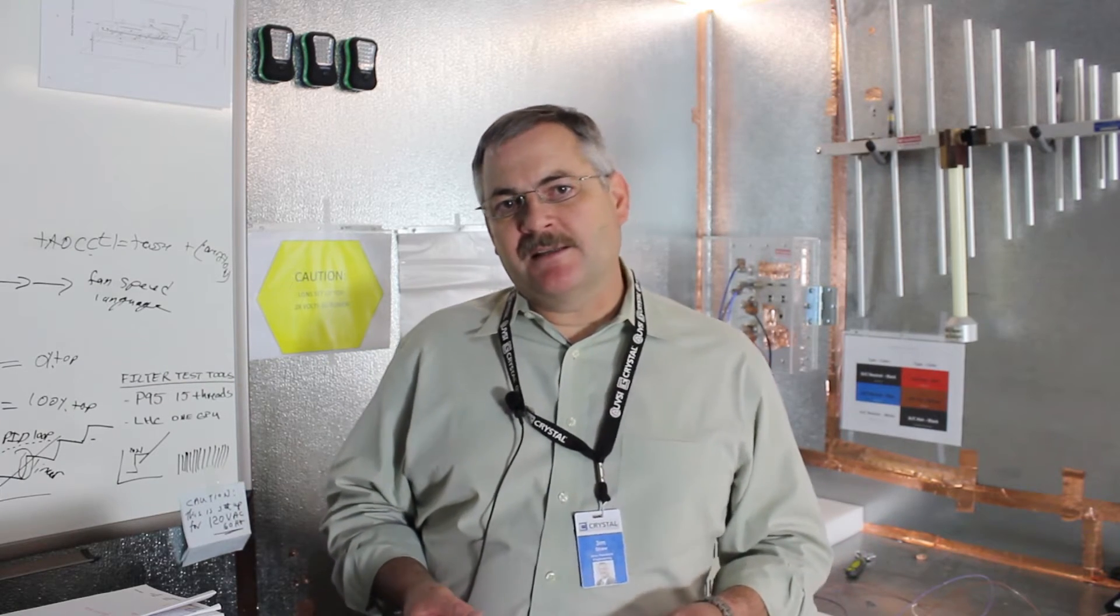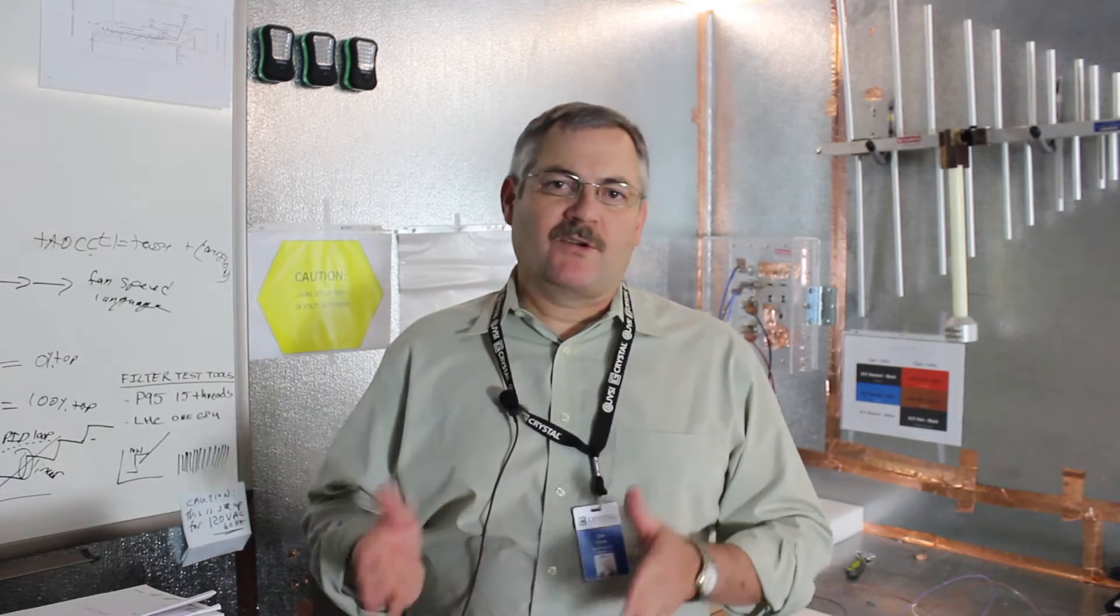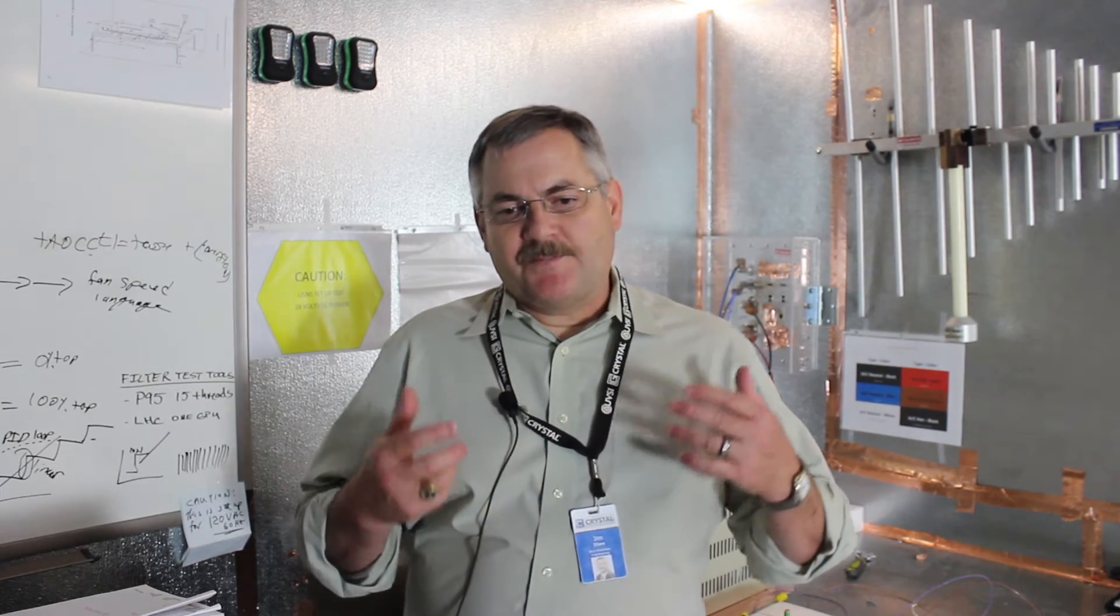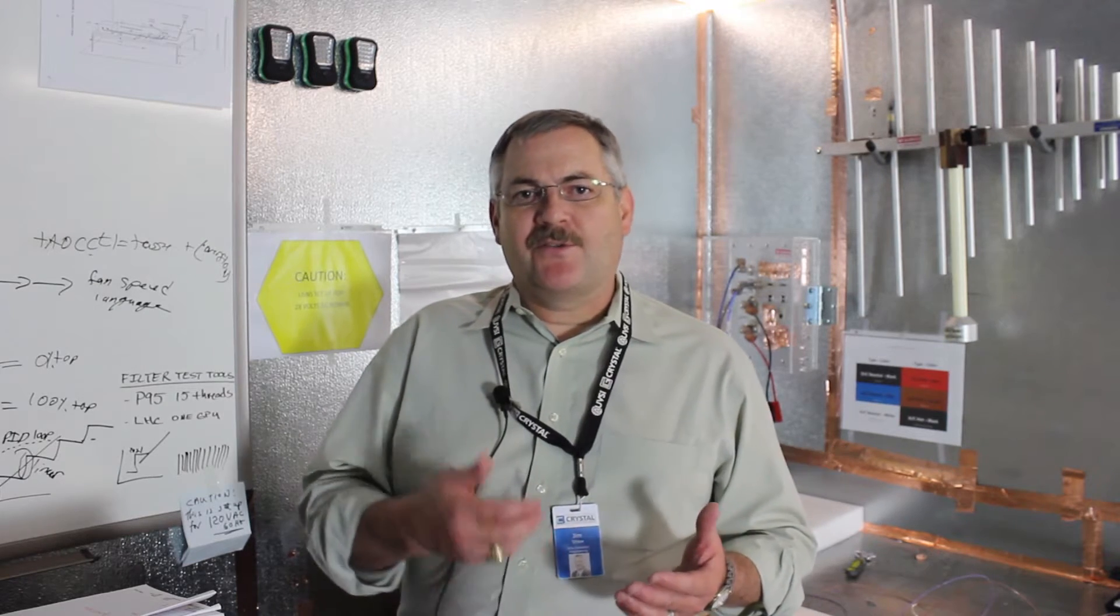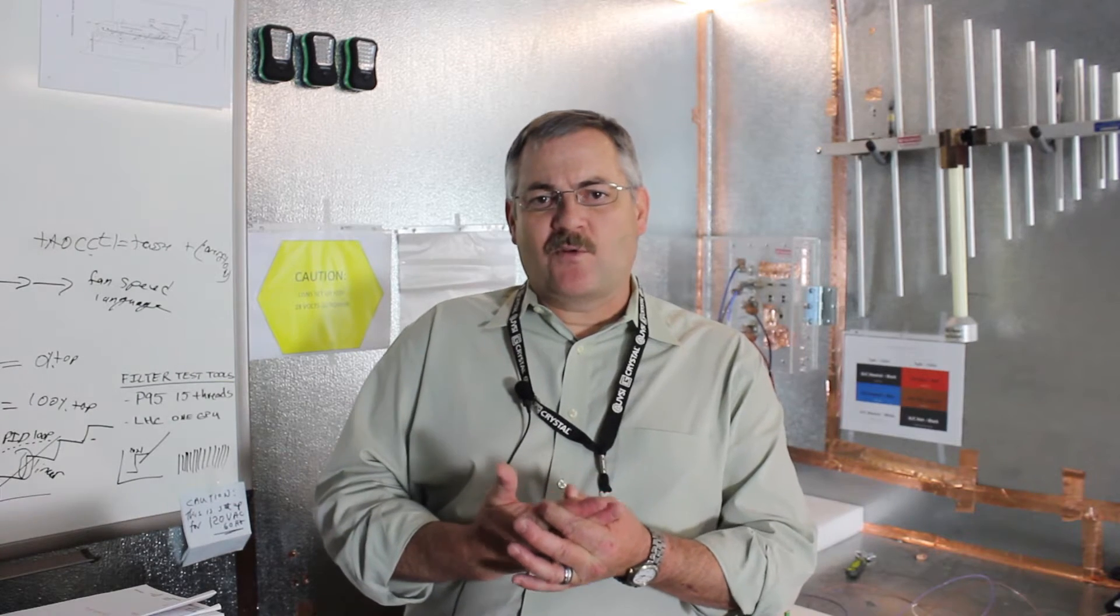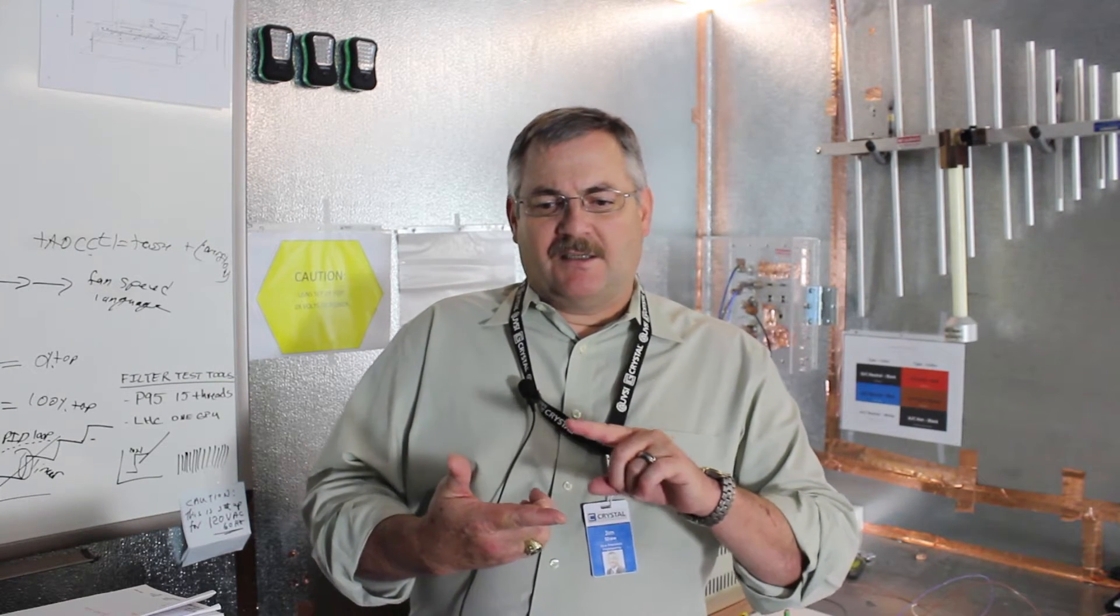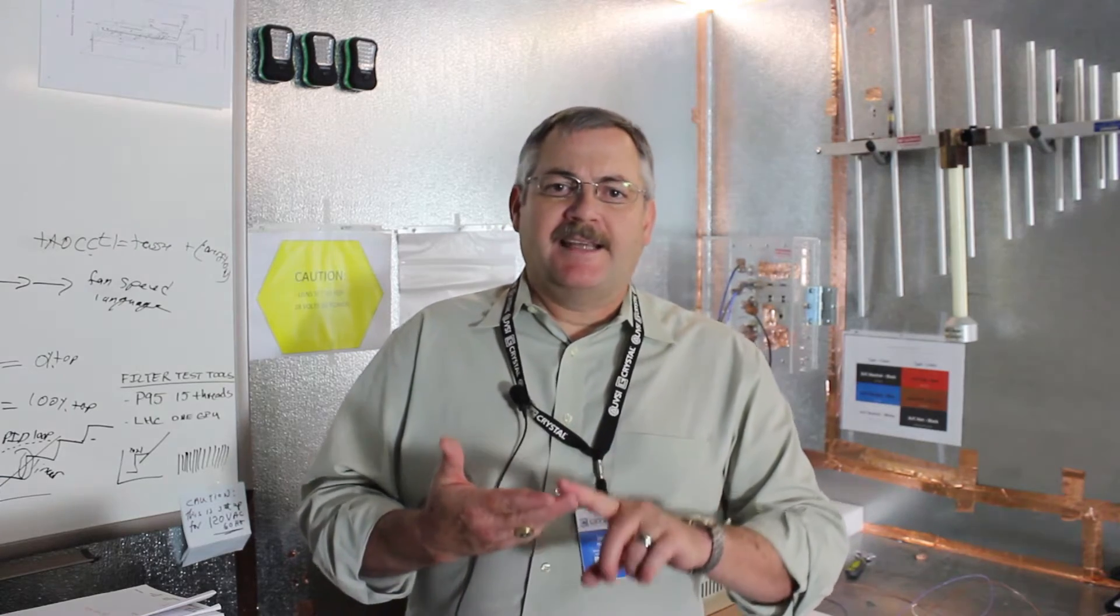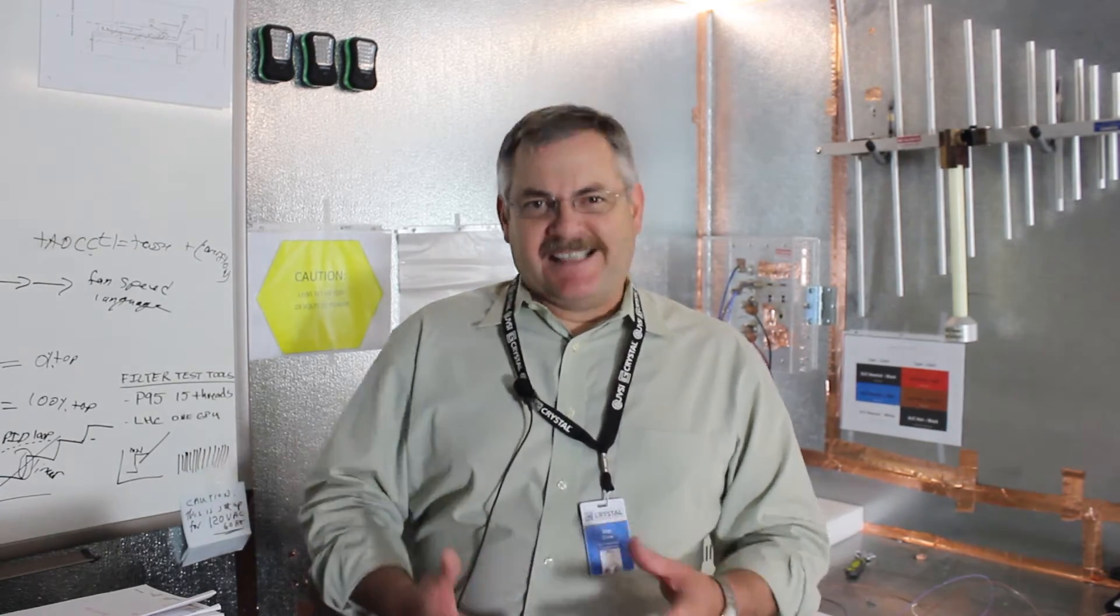What that means is that the standard is essentially split up into four sections. There are conducted emissions, and there are three conducted emission tests that you can perform on units. That's essentially power lines and antenna lines that come into the box. Are you conducting nasty signals into the box via those lines?